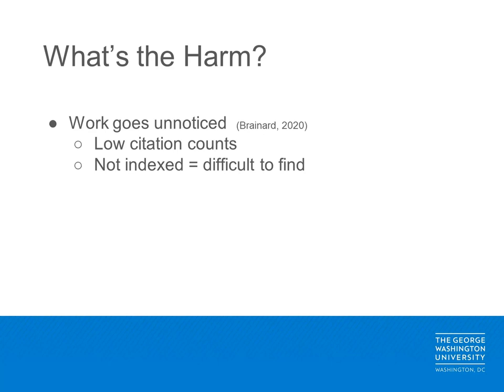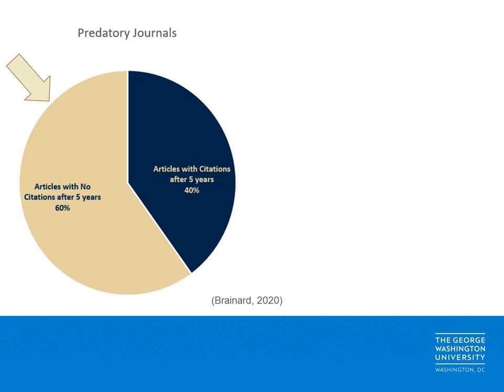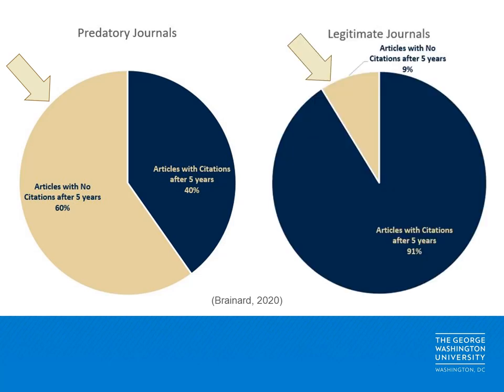A good starting point is citations. Authors want their research to be read and cited so it can become part of a larger scientific conversation, and citation counts are one way to measure the impact research has had on the scientific community. Articles published in predatory journals are not cited at the same rate as those in legitimate journals, partly due to a lack of indexing. Most predatory journals are not indexed in databases such as PubMed, Medline, or Scopus. A recent study found that 60% of articles published in predatory journals did not attract a single citation during a five-year period, compared to just 9% of articles published in reputable journals.